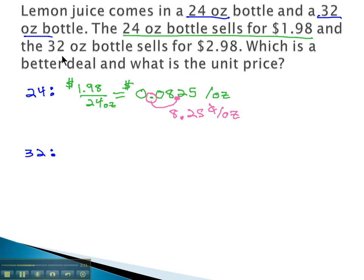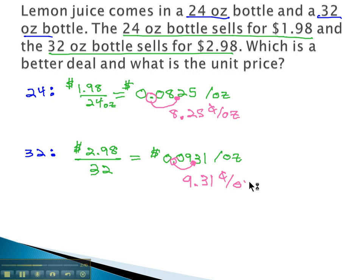Let's do the same thing with the 32 ounce bottle that sells for $2.98. We'll take the price, $2.98, and divide it by its size, 32 ounces. When we take 2.98 and divide by the 32 ounces, we get 0.0931 dollars per ounce. If we move the decimal point twice to make it in cents, 9.31 cents per ounce.